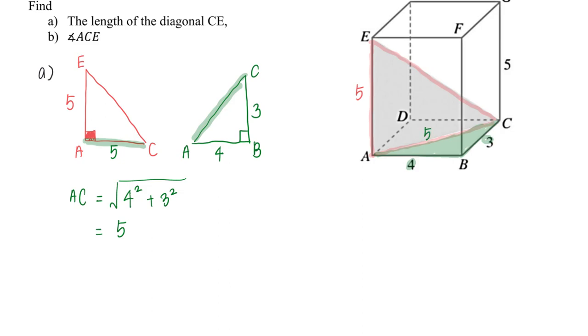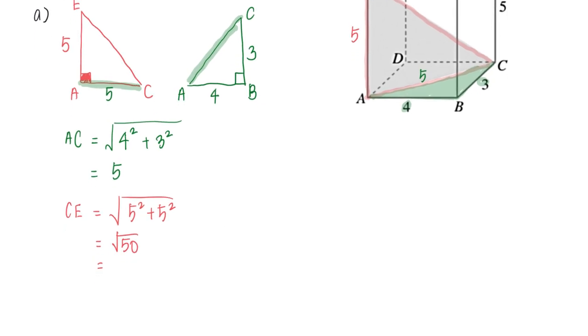Now I know AC is 5 and AE is 5. From here I can find CE: CE equals square root of 5 squared plus 5 squared by Pythagorean theorem. This equals square root of 50, which is 7.0711 cm.